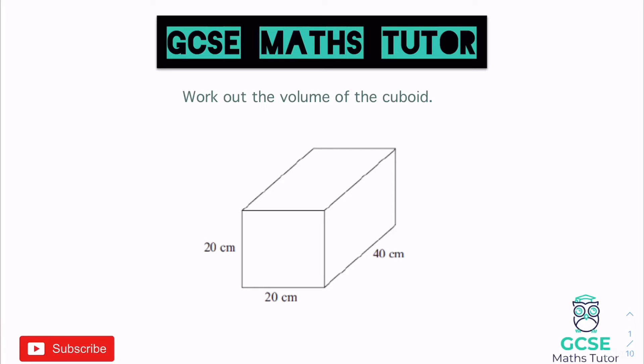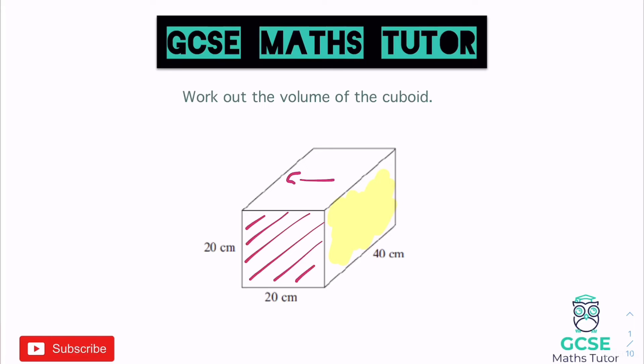We multiply the cross section area by the depth — however far that goes through the shape. For a cuboid, the cross section can actually be any of the faces. All the cross section is, is one of the faces that extends all the way through the shape. For the cuboid here, I'm going to look at the front face as the cross section. If you imagine slicing it, that cross section would stay constant all the way through in this direction, which in this case is the depth.